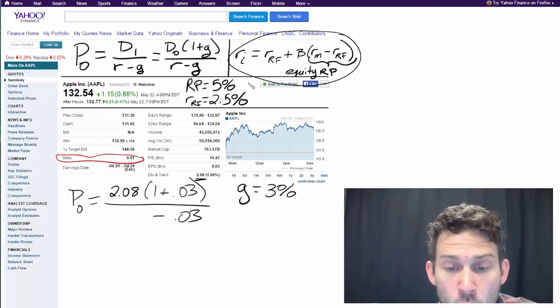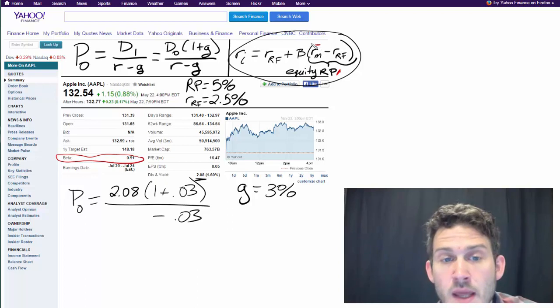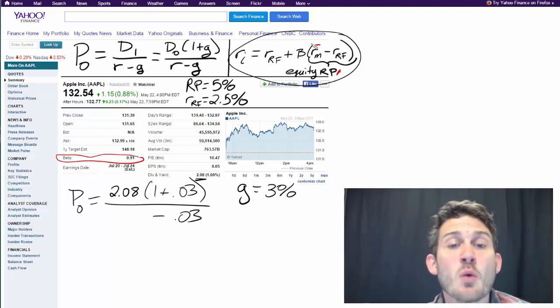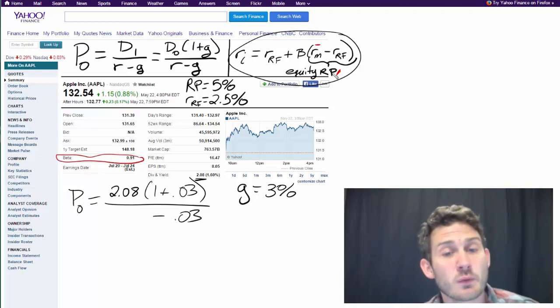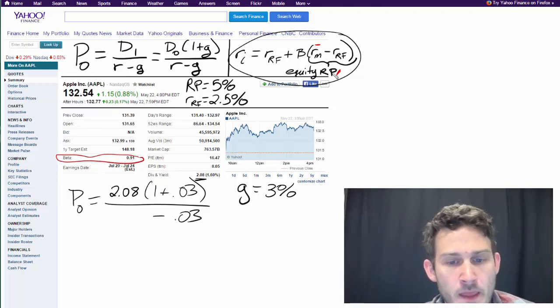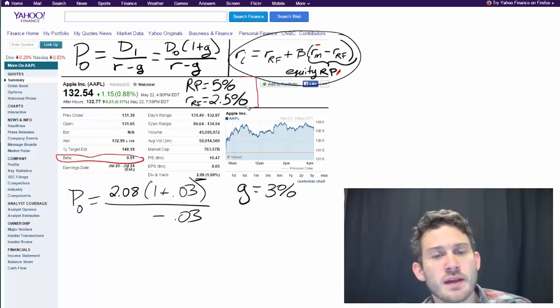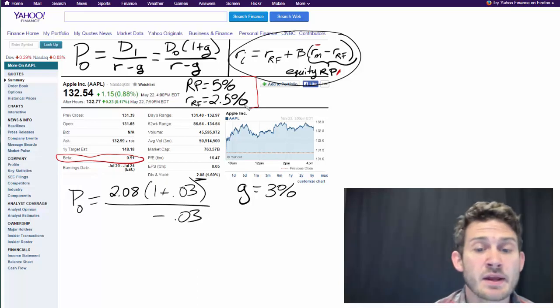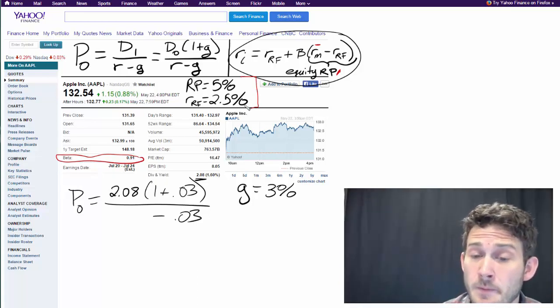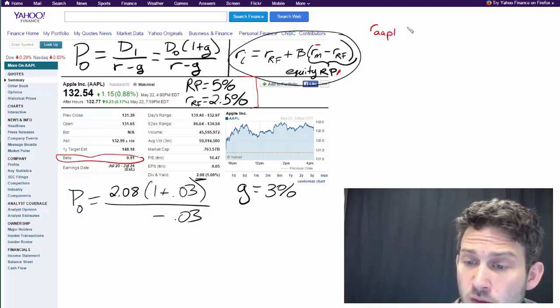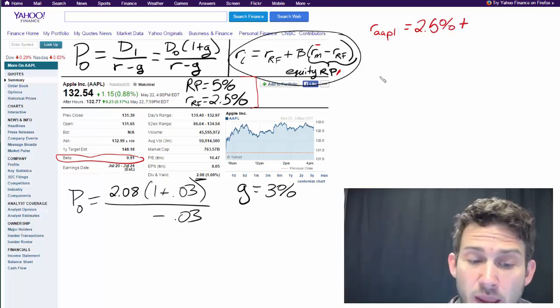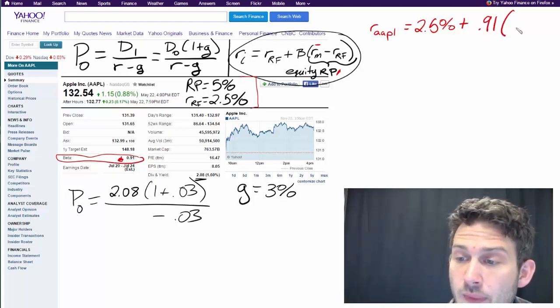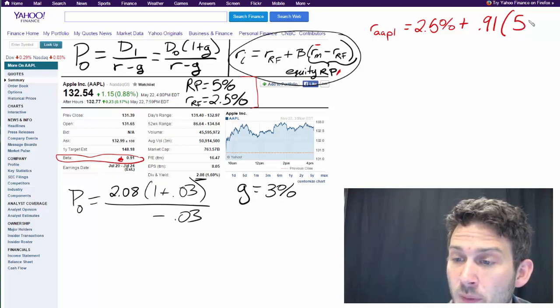One thing I want to make sure is clear is that there is a difference between equity risk premium and the return on the market. Sometimes you might see the return on our market, which then we have to subtract off the risk free rate. However, other times it's going to say this is what the equity risk premium is. We're going to be using a risk premium of 5% and a risk free rate of 2.5%. We will solve for the required return on Apple.